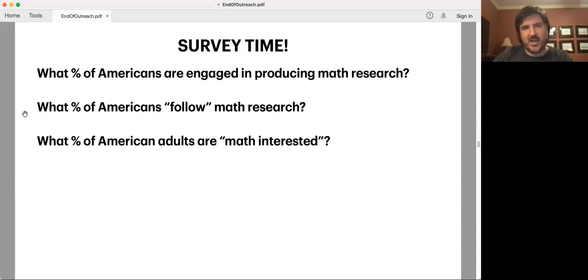Here are my answers of what I think is going on. I think basically zero percent of Americans are engaged in producing math research. I mean, it's not zero percent, but the number of research mathematicians, even if you include undergraduate researchers, it's basically zero. There's some small number of thousands of people, maybe 10,000, maybe 20,000. But in terms of the American population, it's vanishingly small.